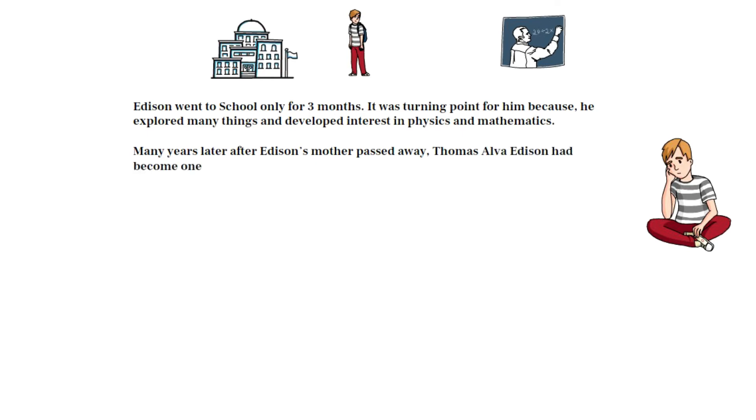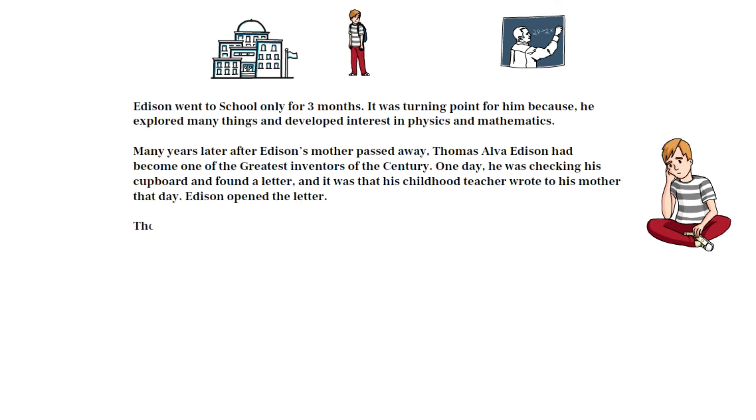Many years later after Edison's mother passed away, Thomas Alva Edison had become one of the greatest inventors of the century. One day, he was checking his cupboard and found a letter, and it was the one his childhood teacher wrote to his mother that day. Edison opened the letter. The matter written in the letter was: school cannot allow your son to attend classes anymore, he is mentally impaired, he is rusticated.